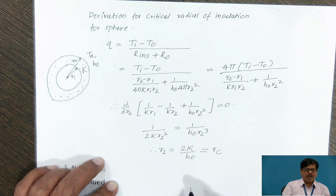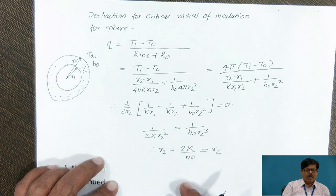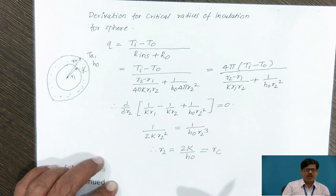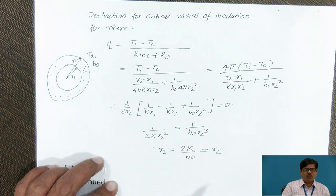As we have discussed the concept of critical radius of insulation, one should ensure that when applying insulation on a surface, if the pipe radius is less than the critical radius, then applying insulation on the surface will always increase the heat loss up to critical radius and decrease after it. If the outer radius of insulation is greater than critical radius, then putting insulation will decrease the heat loss. So this is the critical radius of insulation concept.